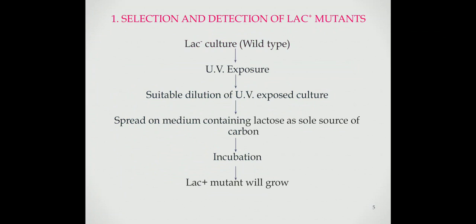The first example of this method is selection and detection of lac positive mutants. The lac positive mutants are the mutants that use lactose as a source of carbon and energy. To select and detect lac positive mutants from a lac negative population, lac negative cell suspension is exposed to mutagen to increase the rate of mutation. A suitable dilution of the mutagen-exposed culture is spread on a solid medium containing lactose as a sole source of carbon. The plates are incubated at suitable temperature for 24 hours. The lac positive mutants will grow by utilizing lactose and form colonies that can be detected easily, while lac negative cells are unable to use lactose and fail to grow and form colonies.